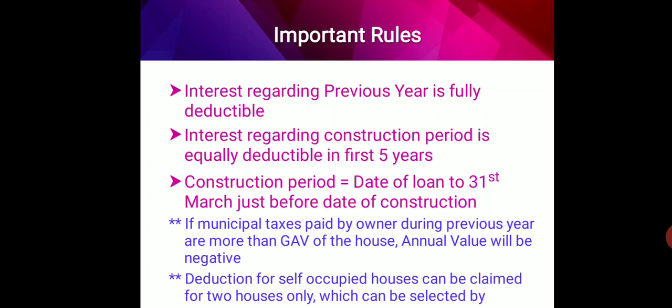One-fifth of the construction period interest is taken for each previous year. The construction period means from the date of loan to the 31st March just before the date of construction completion. Also to be remembered: if municipal taxes paid by the owner during the previous year are more than the gross annual value, then the annual value will be negative. Deduction for self-occupied houses can be claimed for two houses only, selected by the assessee.